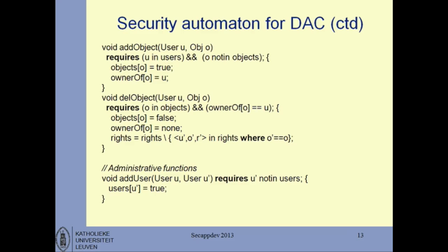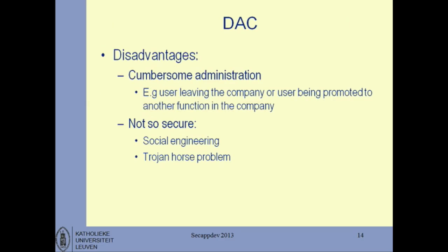A question was raised: when adding an object, shouldn't some rights be added automatically? That's a valid design choice. The way I specify it here, when you create an object nobody has any rights to it — as a next step you as the owner should add rights for yourself and maybe others. You could alternatively give the owner default read and write access, but there's no choice that works for everything. The choice here is to give nothing by default, and the owner decides after creating an object what rights to give to himself.